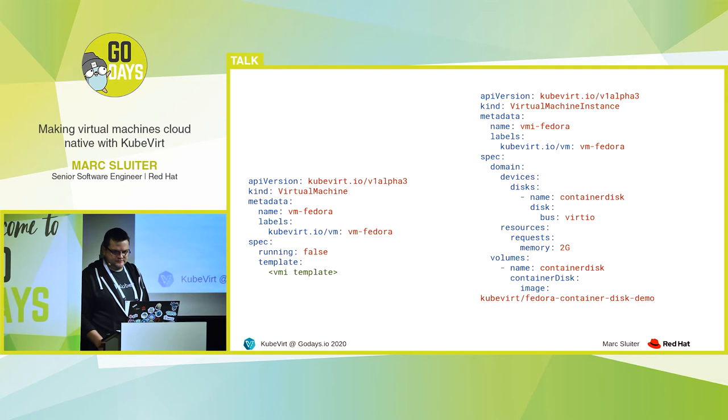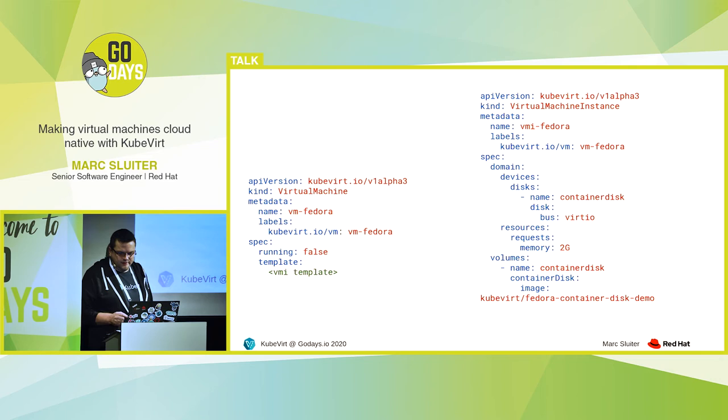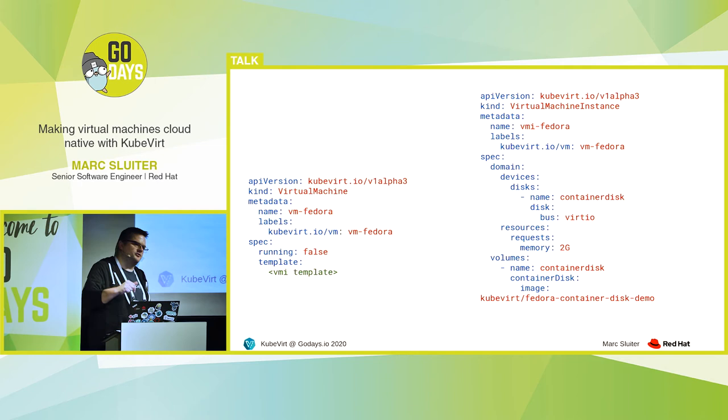In this example you see we have a container disk in the devices section, mapped to the container disk volume at the bottom, which is of type container disk. This is a little workaround for getting virtual machine images into the cluster — we misuse Docker Hub a bit here. We push our images to Docker Hub, but it's not a real container image; it just contains our virtual machine image. So we load the image from Docker Hub, extract our virtual machine image, and start it.